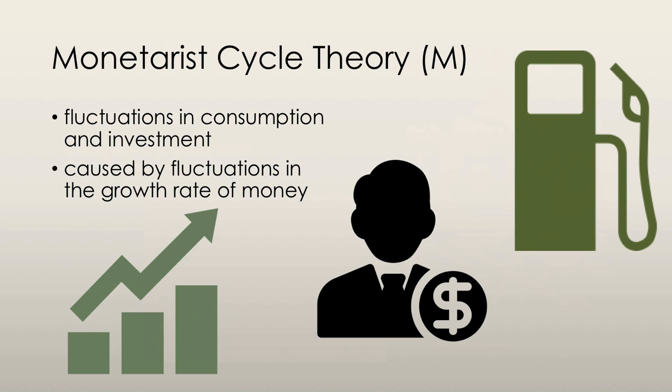Monetarist cycle theory, another mainstream business cycle theory, predicts that fluctuations in investment and consumption, which are driven by fluctuations in the growth rate of the quantity of money, are the main source of fluctuations in aggregate demand. The faster the growth rate of money, the more consumption and investment take place, and the quicker aggregate demand increases.